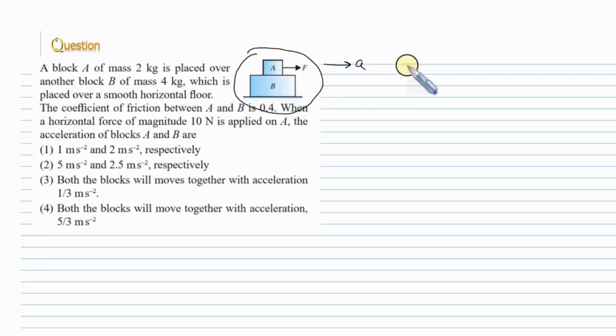First, assume the system moves together. For this, common acceleration should be equal to applied force F divided by total mass of the system Ma plus Mb. Capital F equals 10 Newton. This is 10 divided by total mass 2 plus 4, that equals 6. That means this common acceleration is equal to 5 by 3 meter per second square.